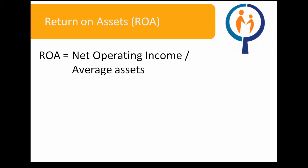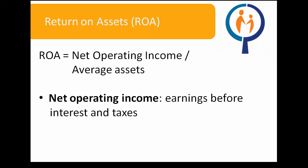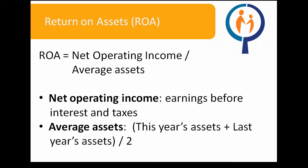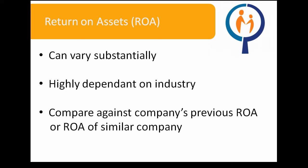Let's move on to Return on Assets. Return on Assets, or ROA, is an indicator of how profitable a company is relative to its assets. It is calculated by the formula net operating income divided by average assets, where net operating income consists of earnings before interest and taxes, and average assets consists of this year's assets and last year's assets divided by two. ROA results can vary substantially and are highly dependent on the industry, as some may require high capital investments on a consistent basis.